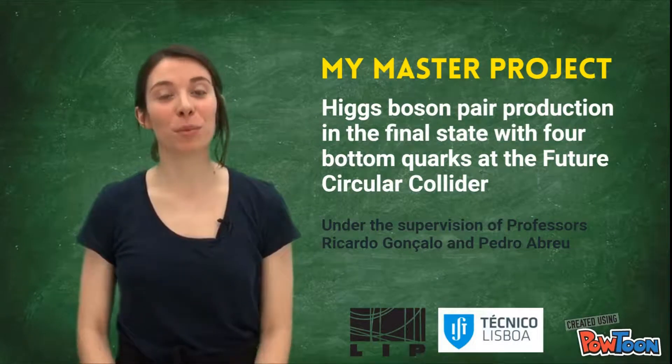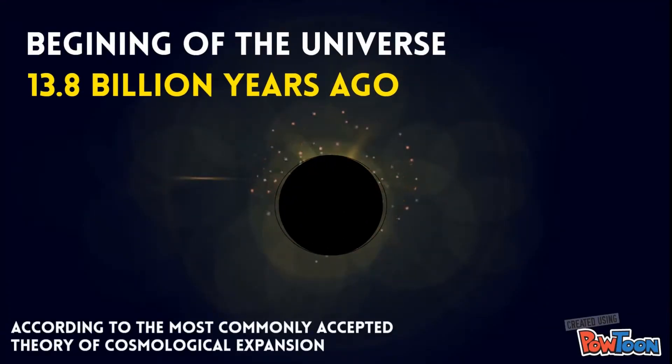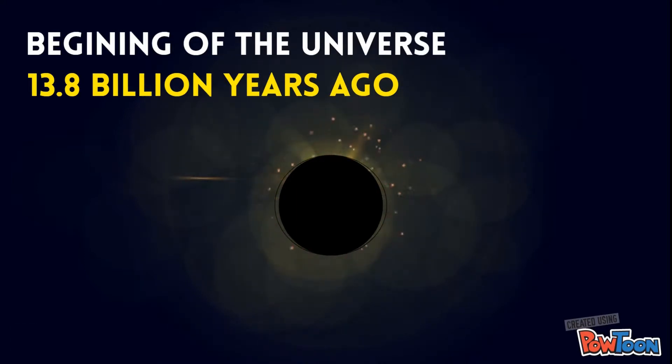So, let's start from the beginning. In the beginning, the Universe was extremely compact. Everything that existed was packed very close together, and the temperature was so high that the fundamental particles moved freely at extremely high energies.